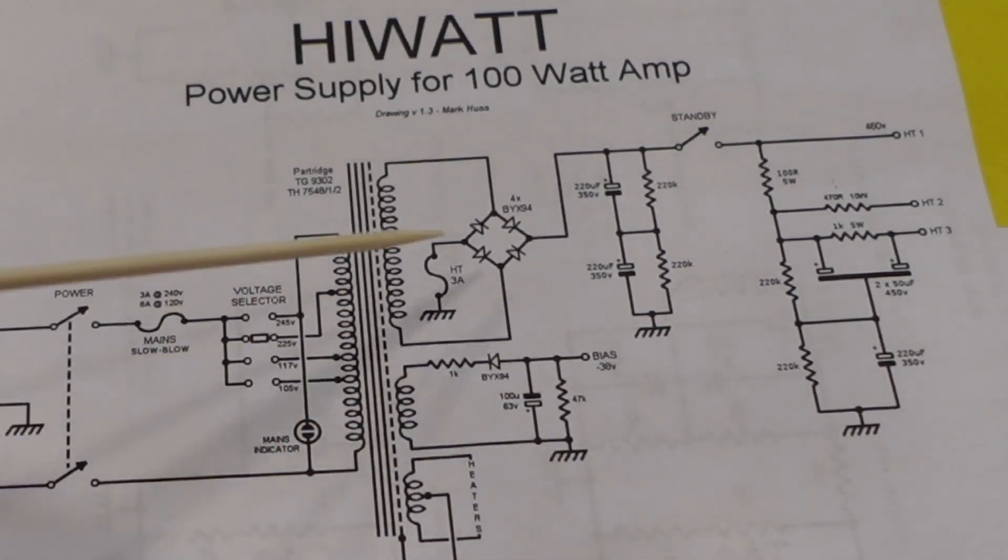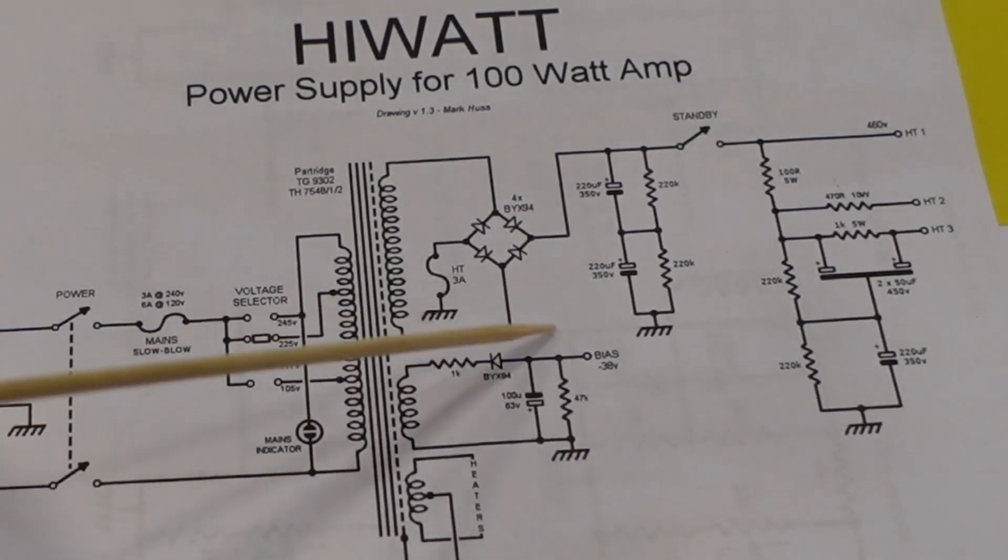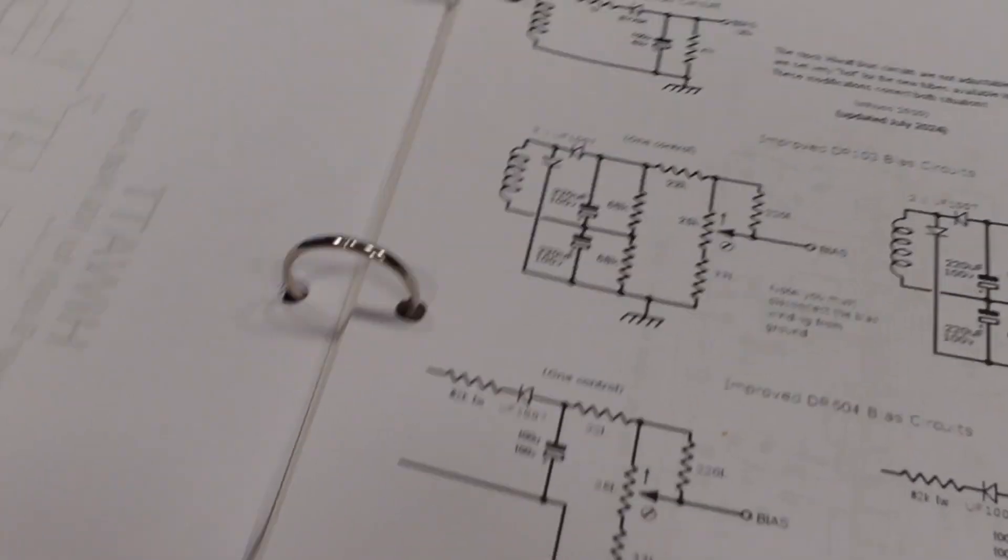That's the power supply. We're not going to use this bias circuit because we're going to do a voltage doubling bias circuit so I can adjust the bias for a variety of tubes, but that will be in the second video. To figure out the layout, all we have to do is refer to our pictures and diagrams.